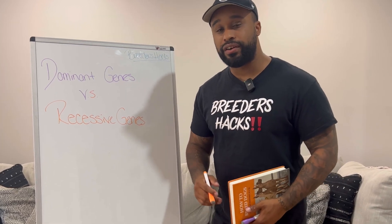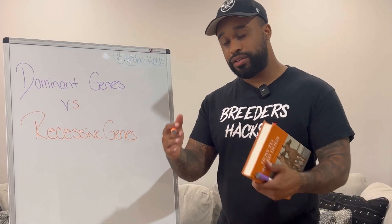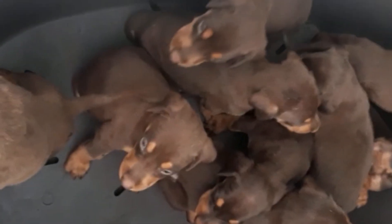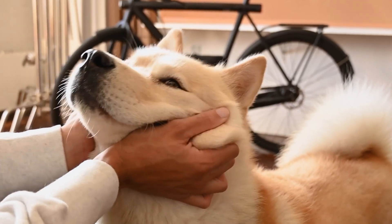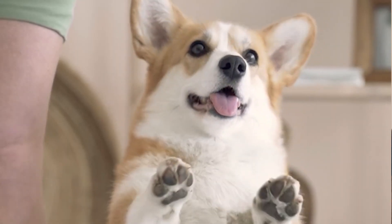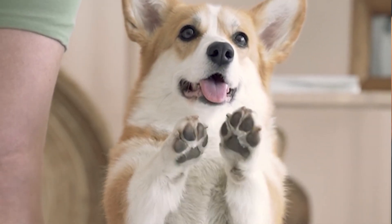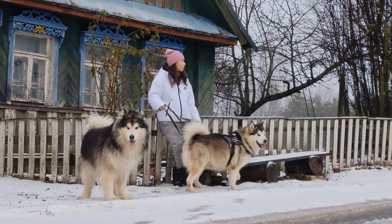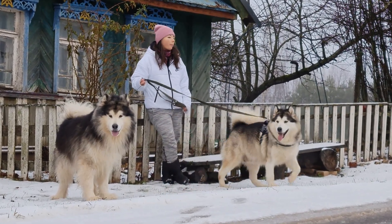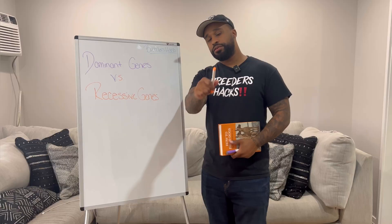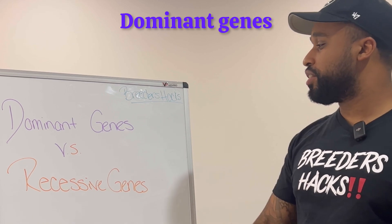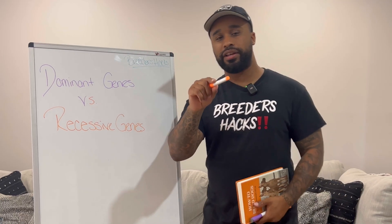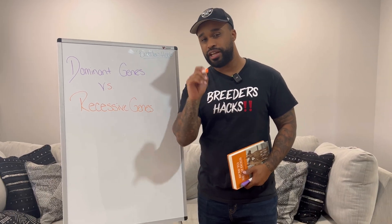What if I told you you could get the right outcomes, the right productions out of your breedings? Whether it's the head shape you want, whether it's the feet that you want, whether it's the bone, body, mass, whatever it is that you want on your breed, any breed for that matter. We're going to be talking about dominant genes versus recessive genes and how to get the outcomes you want out of your breeding.